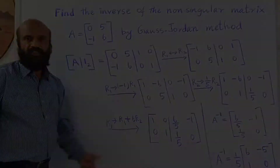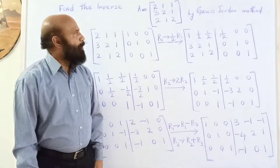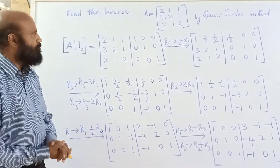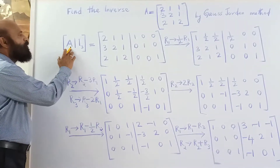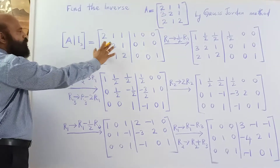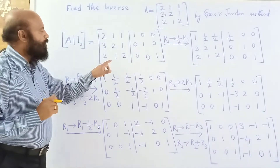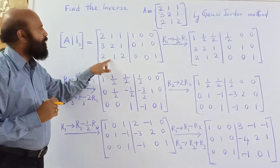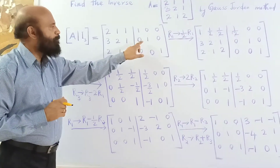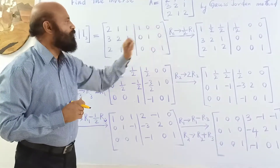Next, we are given a non-singular 3×3 square matrix and we have to find its inverse using the Gauss-Jordan method. The first step is to augment the given matrix with an identity matrix of order 3. Write the given matrix as it is, then adjoin the 3×3 identity matrix. We have to transform the left side into the identity matrix using elementary transformations, applying the same operations to the right side — which will then become the inverse.